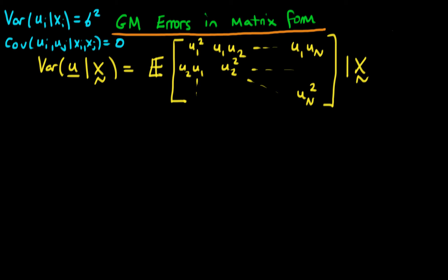In this video I want to continue our discussion as to how we can represent the Gauss-Markov assumptions of homoscedasticity and of no autocorrelation amongst errors in matrix form. At the end of the last video we got that the variance of our random vector u given x was equal to the expectation of this matrix on the right here, given that we have our independent variables x.